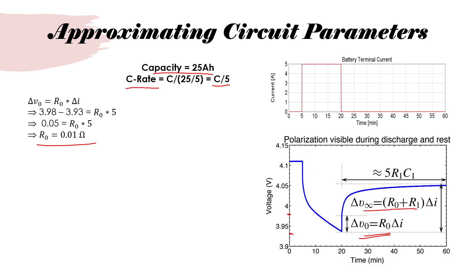The second relation is delta V infinity which is roughly equal to 4.05 minus 3.93. If you do the math, you'll end up getting R1 since delta V infinity, R0 and delta I is already known. You end up getting R1 equals to 14 milliohms.